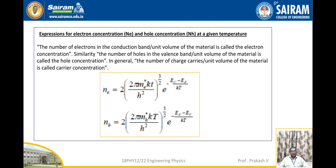Expression for electron concentration N_e and hole concentration N_H at a given temperature. The number of electrons in the conduction band per unit volume is called electron concentration; similarly, the number of holes in the valence band per unit volume is called hole concentration. In general, N_e equal to 2 × (2π m_e* kT / h²)^(3/2) × exp(−(E_C − E_F)/kT). These are the expressions related to electron and hole concentrations.